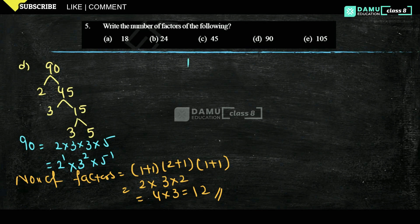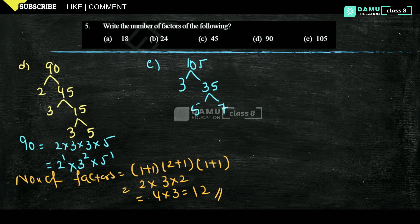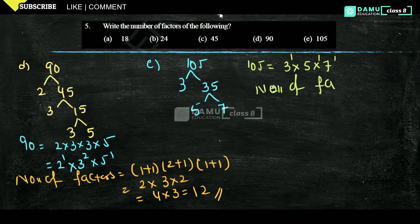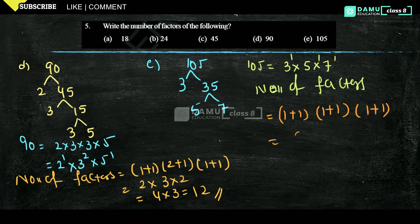The last one is 105. Factorize: 105 is not divisible by 2, so divide by 3 to get 35, then 5 × 7. So 105 = 3 × 5 × 7 = 3¹ × 5¹ × 7¹. Number of factors: (1+1) × (1+1) × (1+1) = 2 × 2 × 2 = 8 factors.